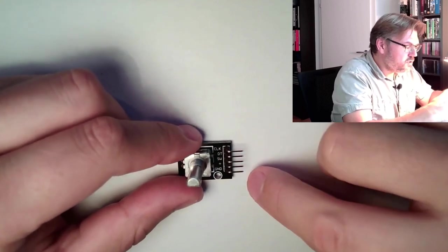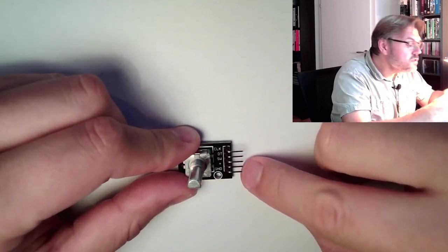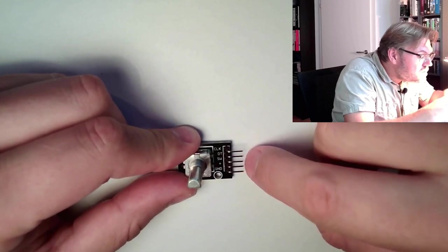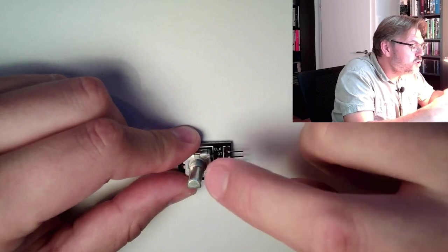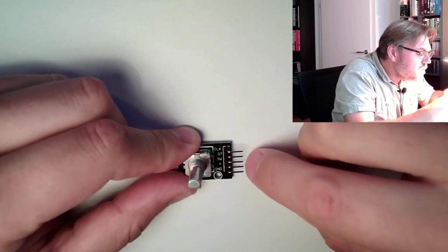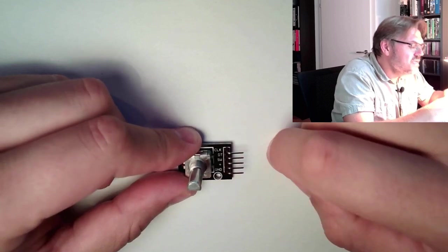And we have some connections, here's GND, ground, this is clear for us. Then we have plus, we have SW, this means switch, so this is the button here. Then we have DD and CLK.